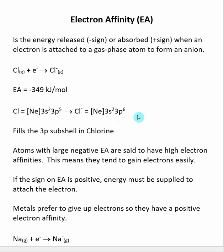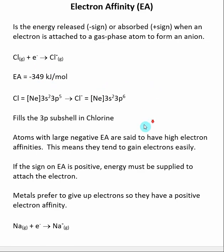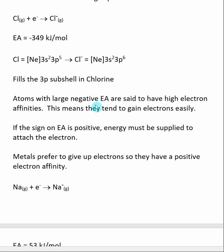We've discussed that having full subshells tend to produce a certain measure of stability, and here that stability is shown by energy being released during the addition of an electron. In general, atoms with large negative electron affinities are said to have high electron affinity, and that means they actively try to gain electrons. Energy is being released when they do that.